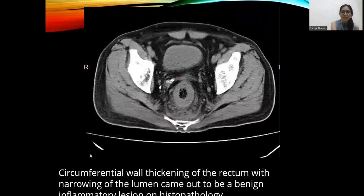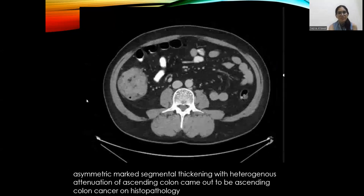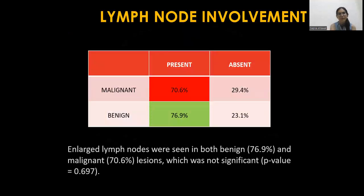Let's discuss a few cases from our study. In the first case, an axial CT section shows circumferential bowel wall thickening of the rectum with narrowing of the lumen, which came out to be a benign inflammatory lesion on histopathology. In the second case, asymmetric marked thickening with heterogeneous attenuation of the ascending colon came out to be ascending colon cancer on histopathology.